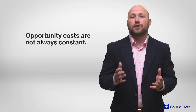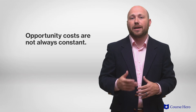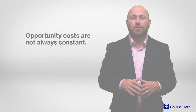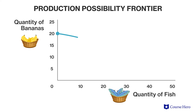Opportunity costs are not always constant and can often increase as more of one item is being produced. When opportunity costs increase, the production possibility frontier becomes a concave or bowed-out curve. Increasing opportunity costs occur when more resources need to be allocated to produce the additional unit of the good.